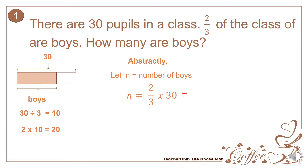So in order to multiply two-thirds times 30, I'll make the whole number 30 a fraction by writing 1 in the denominator. So I can have 2 times 30 all over 3 times 1. Before I multiply 2 and 30 as well as 3 and 1, I'll reduce by removing the greatest common factor between 30 and 3.